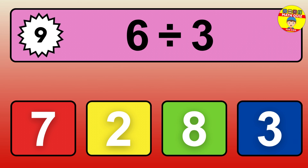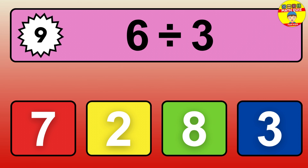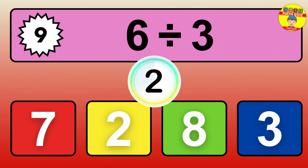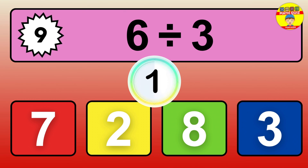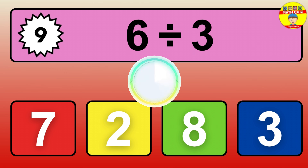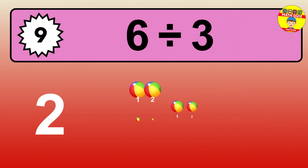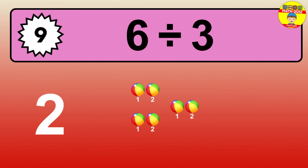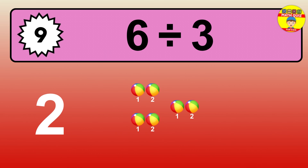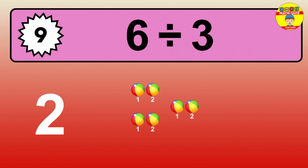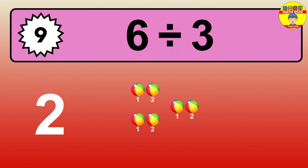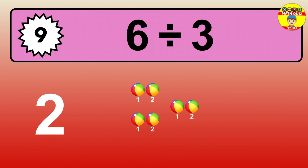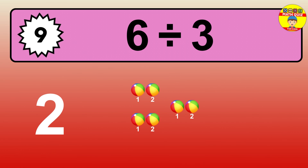What is 6 divided by 3? Picture this. You have 6 objects to divide into groups of 3. How many groups can you form? Let's think about it. Ready to find out? Let's break it down. Imagine you have 6 objects. Can you picture them lined up? Now consider splitting them equally into smaller groups of 3.